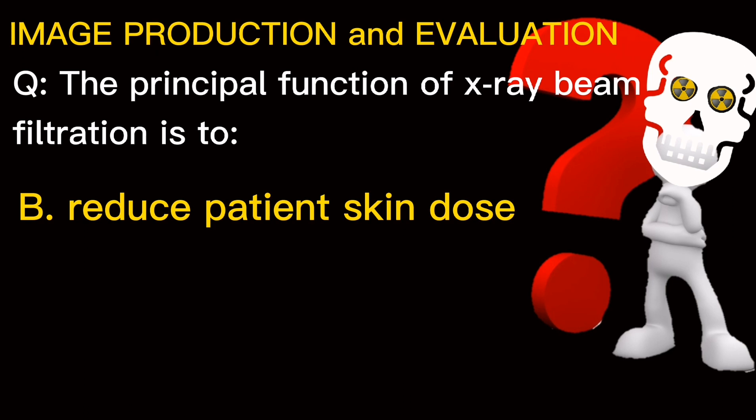Filters, usually made of aluminum, are used in radiography to reduce patient dose by removing this low energy radiation, resulting in an X-ray beam of higher average energy. Total filtration is composed of inherent filtration plus added filtration. X-ray tubes operating above 70 kVp must have a minimum filtration of 2.5 mm of aluminum or its equivalent.